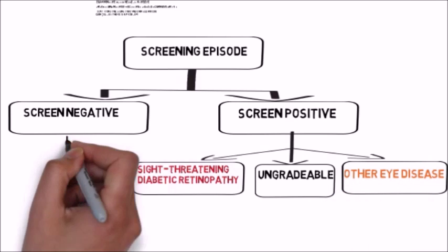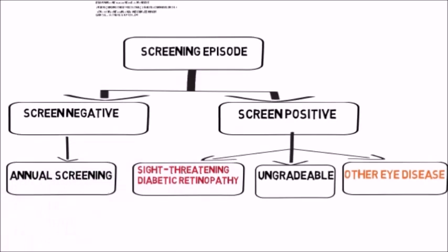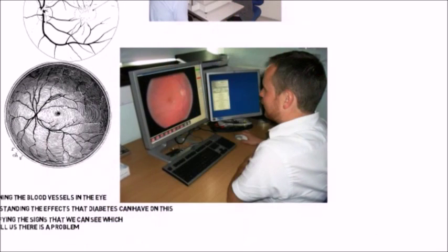If the screening is negative, then the patient is simply referred for annual rescreening. The process of analyzing a retinal scan is basically one of inspecting the scan using computer software, which can manipulate the image, enlarge it, and so on, so that you can get a feel for the pattern of blood vessels on the retina. The process involves making distinctions between different kinds of patterns, which are then coded and entered into a computer system that records the degree of diabetic retinopathy and maculopathy in a particular scan.